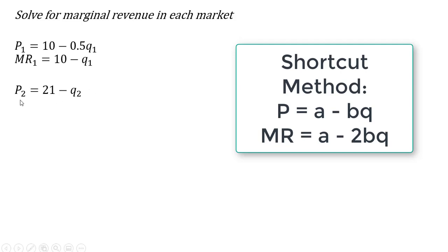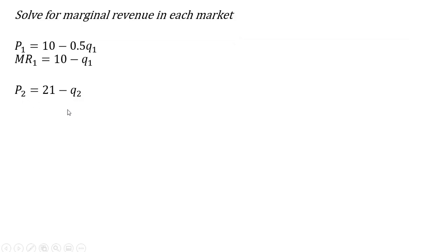And a similar shortcut method for market two. Here's the inverse market demand. We're going to multiply the coefficient on the Q subscript two term by two, and we get the following result.